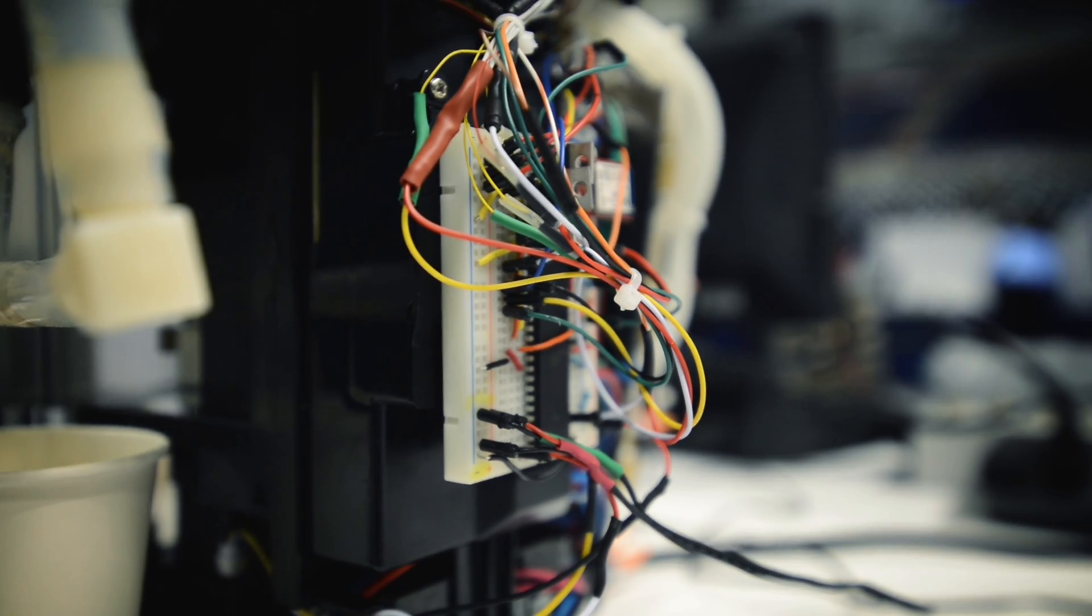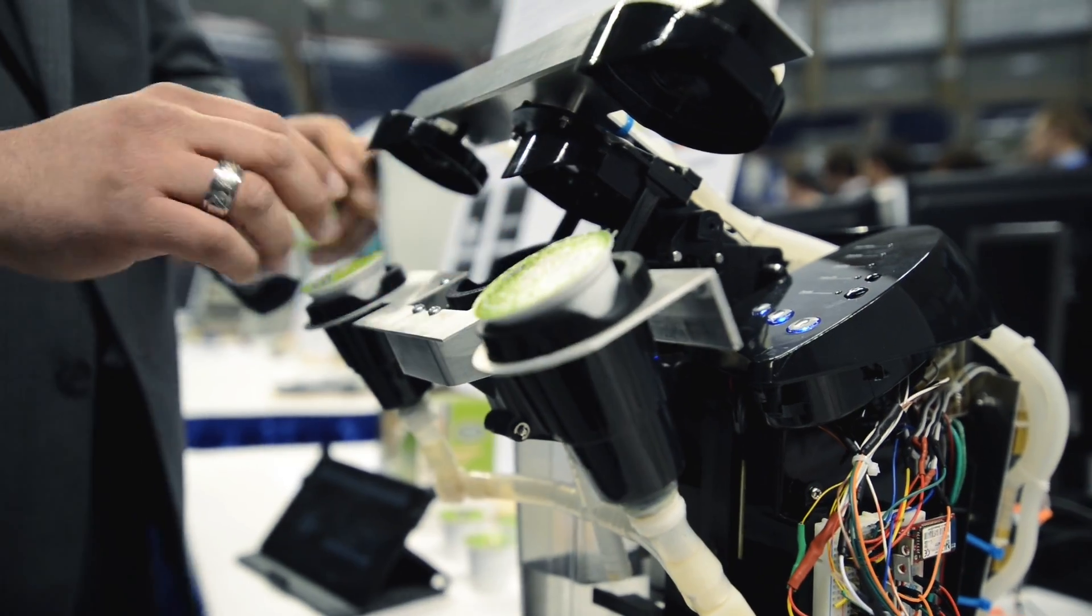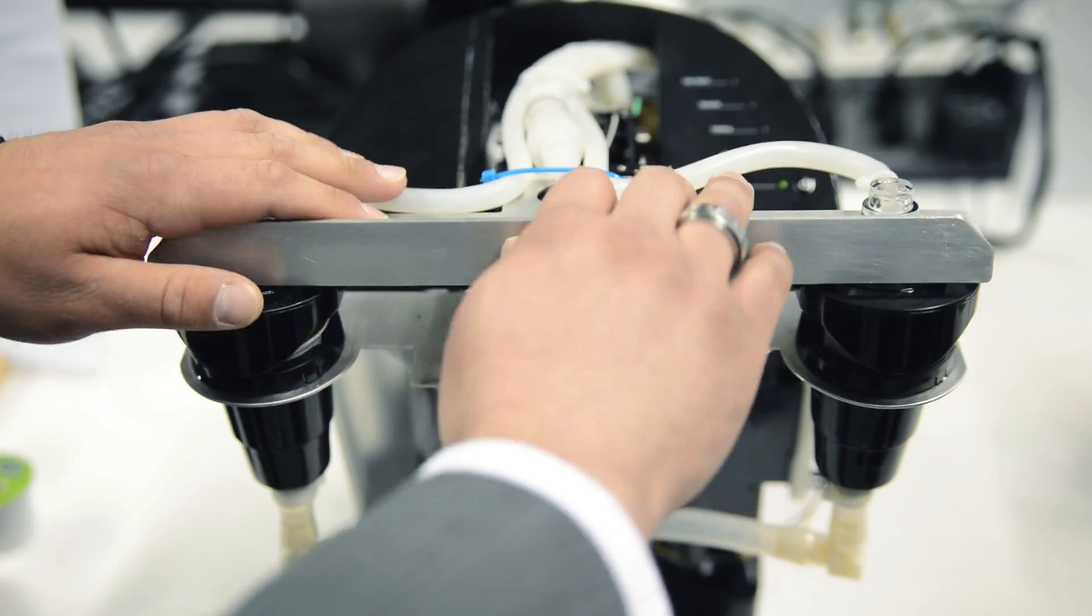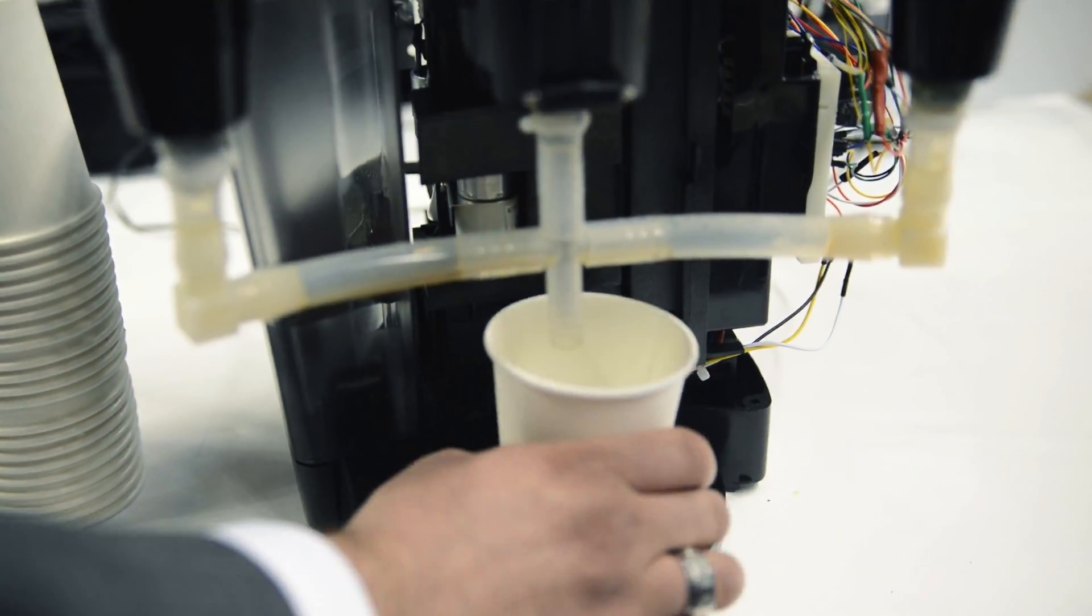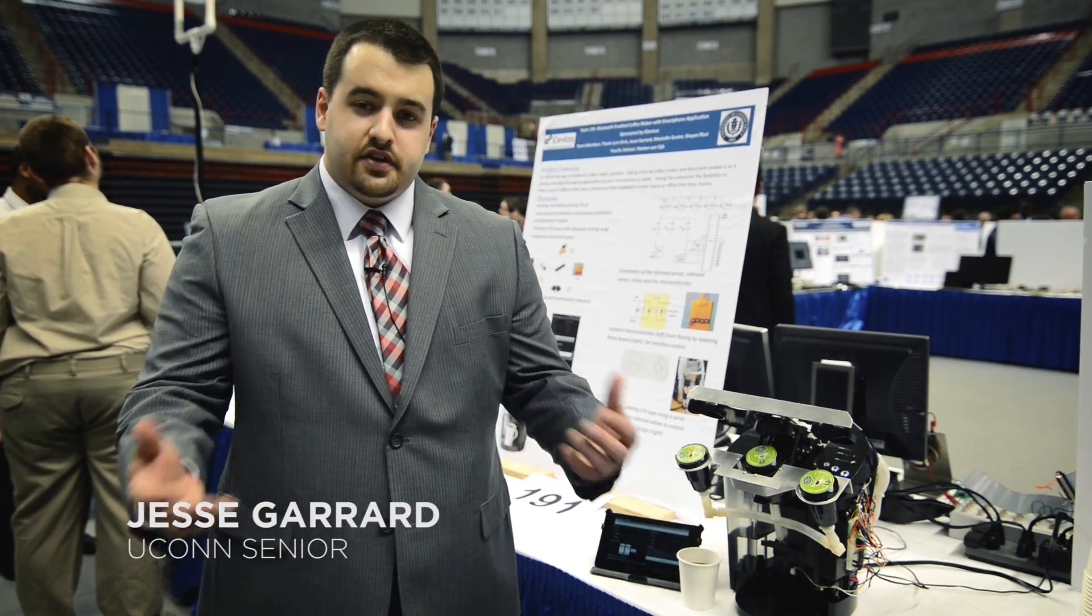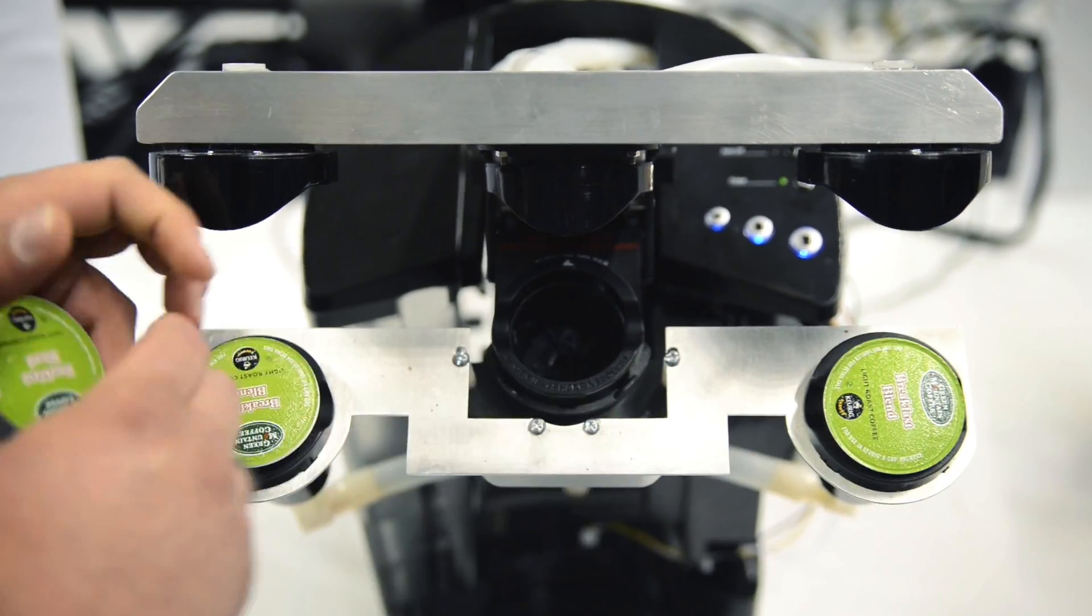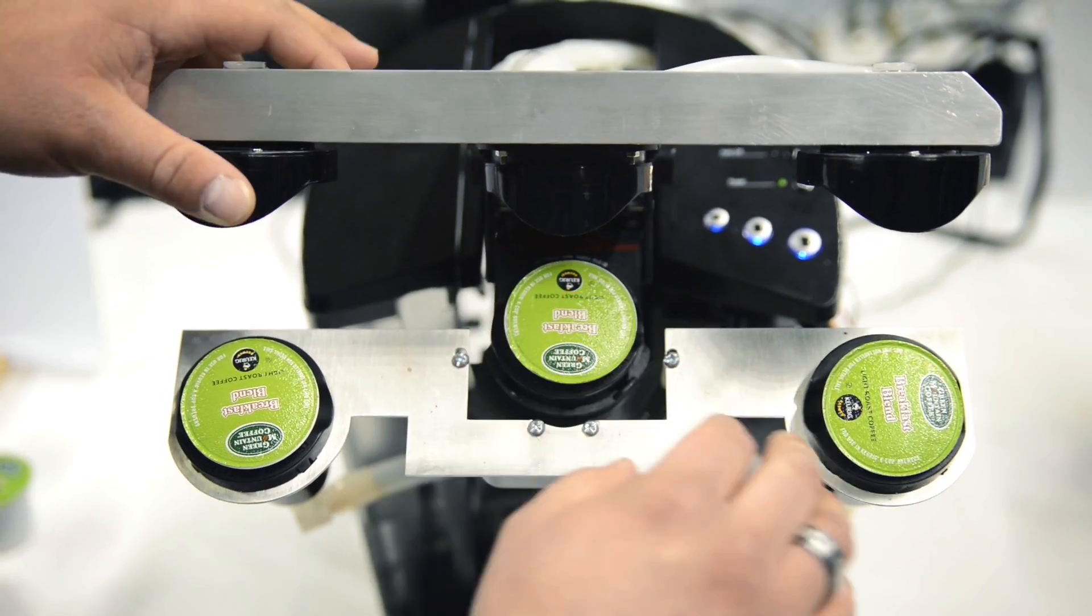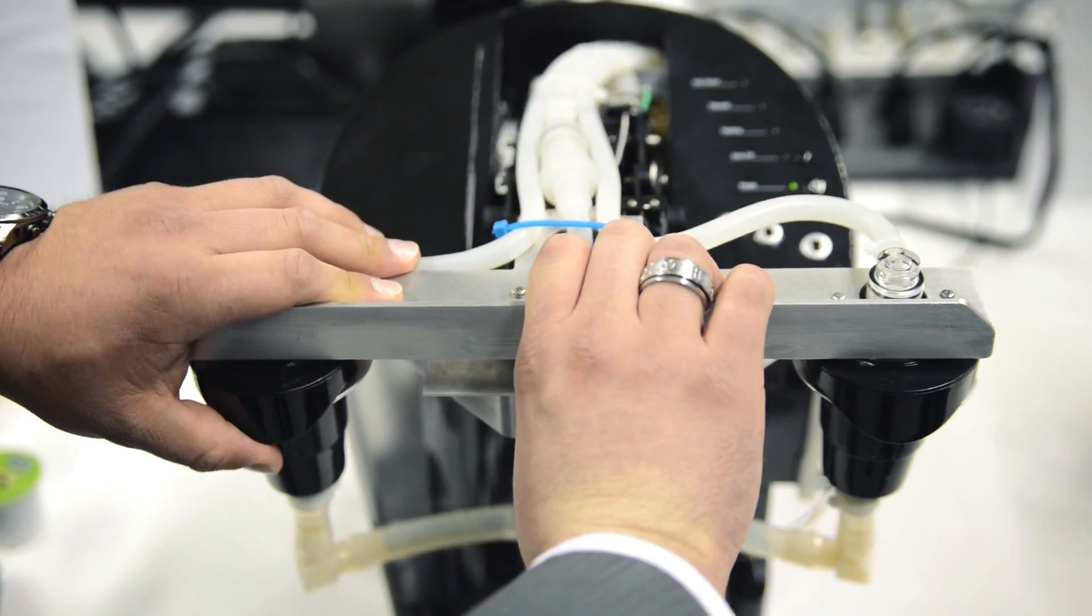This is a Bluetooth enabled Keurig coffee maker. The way we envision this is that somebody gets up in the morning and decides that they want breakfast blend coffee in the morning and they want to brew it while they're brushing their teeth and getting ready. So they take out their phone.